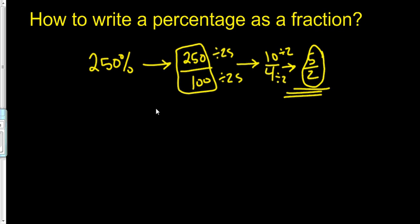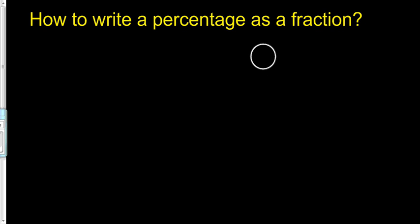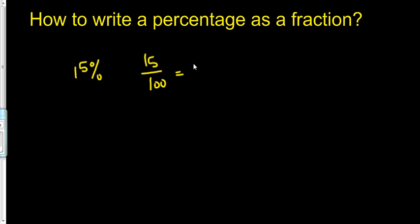Most of the time they're going to want it simplified. So let's try converting a percentage to a fraction and simplifying. Take 15% — that's 15 over 100. Divide both by 5, and that becomes 3 twentieths. There's your simplified fraction.